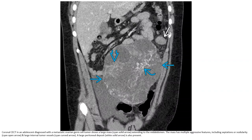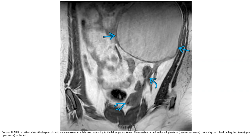Contrast-enhanced CT in a patient diagnosed with metastatic ovarian granulosa cell tumor shows a large mass extending to the mid-abdomen. The mass has multiple aggressive features including septation, nodularity, and internal vascularity. A peritoneal deposit is also seen. T2 MRI shows a large cystic left ovarian mass extending to the left abdomen, attached to the fallopian tube, with the uterus displaced.